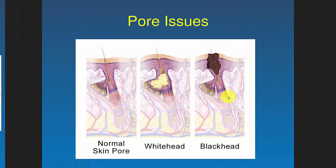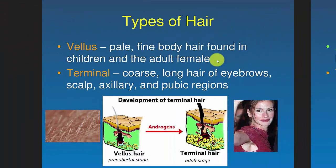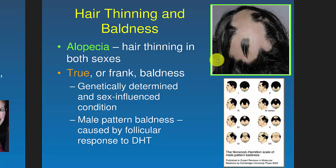On pore issues: when you get an infection in a pore, if it's not open to the surface it becomes a whitehead, because there's no dirt or debris to blacken it. If it's open to the surface, debris gets in and colors the pus darker — that's a blackhead. Types of hair: vellus hair is really fine body hair found in children and adult females. Terminal hair is the coarser hair of eyebrows, scalp, and armpits. Alopecia is hair thinning; true baldness is genetically determined, such as male pattern baldness.